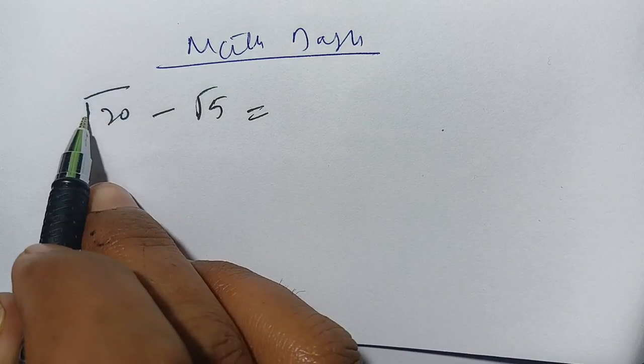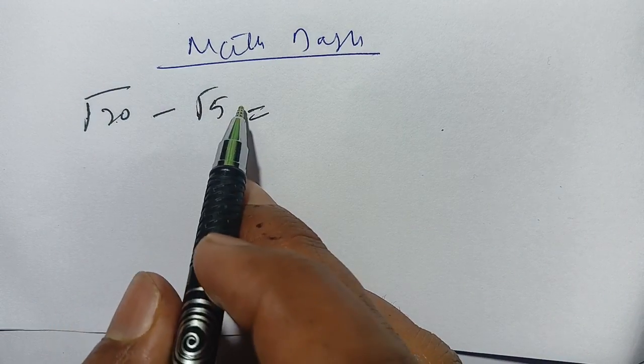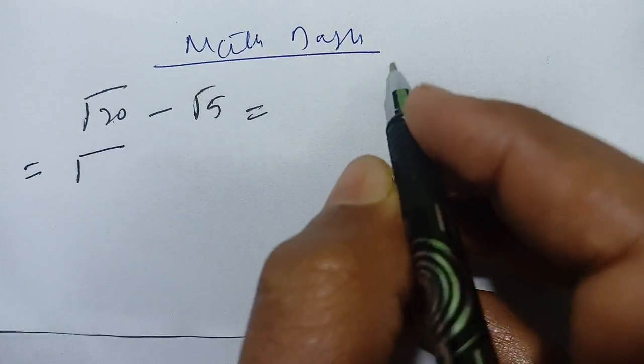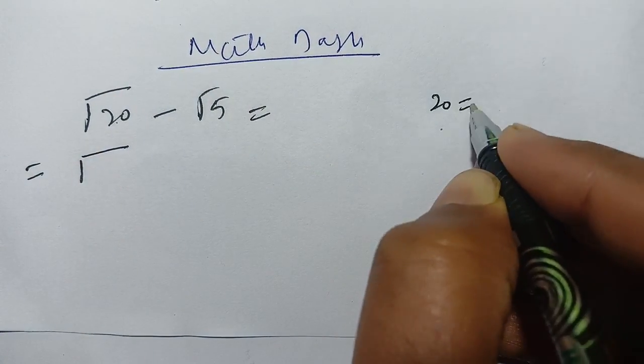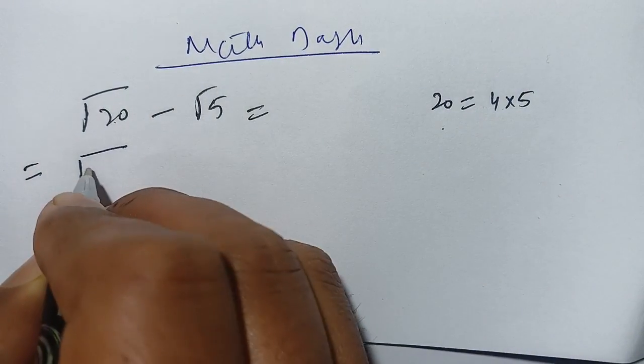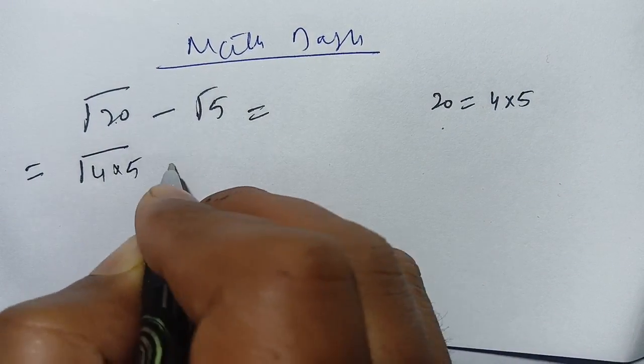How to simplify this square root of 20 minus square root of 5? We can simplify it as square root of 20 can be written as 20 can be written as 4 times 5. We get 4 times 5 minus square root of 5.